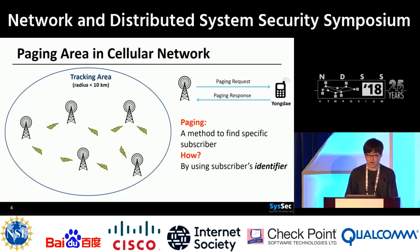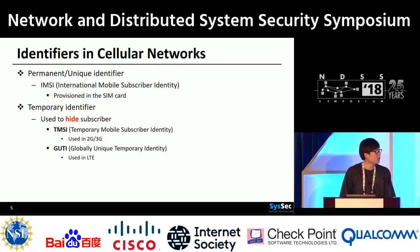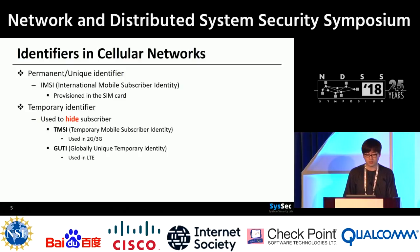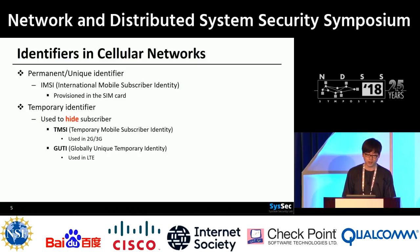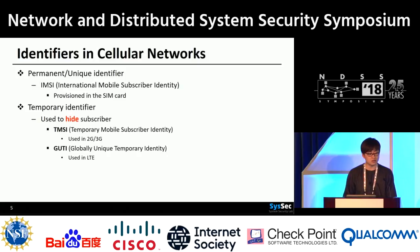In summary, matching an identifier with a person is a location privacy threat. Now, what kinds of identifiers exist in cellular networks? There are two types of identifiers: permanent ID and temporary ID. The IMSI is a unique permanent identifier corresponding to a SIM card. If this IMSI is repeatedly used, as I explained in the previous examples, one can break location privacy. Therefore, a temporary identifier is assigned to each mobile device — TMSI for 2G and 3G, and GUTI for LTE.